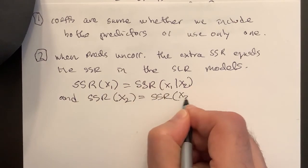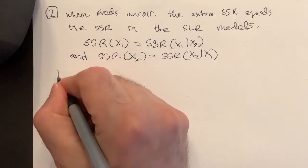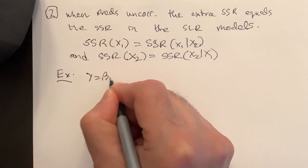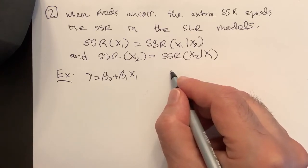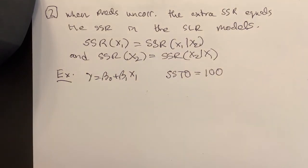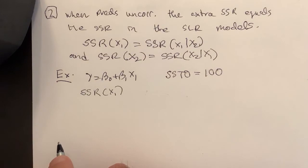The fact that x1 is in the model already does not diminish or increase the explanatory power of x2. Let's do a little numeric example. Suppose we have y = β0 + β1x1. For the same data, suppose we have SSTO equal to say 100, and say SSR(x1) to be after we estimate it, to be 30.